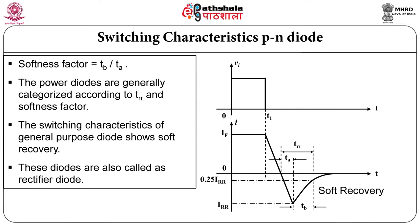From T_B and T_A one new parameter is added — that is softness factor. Softness factor is given by T_B divided by T_A as shown in the timing waveform. This timing waveform is called soft recovery because the diode is recovering softly. This is the switching characteristics of a general purpose diode.